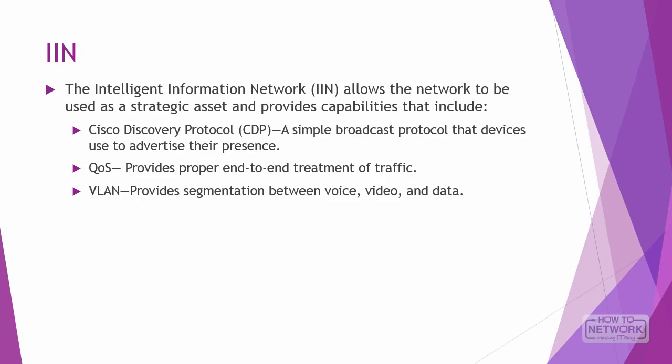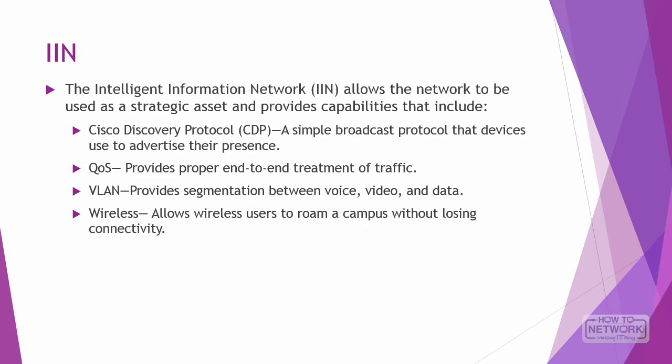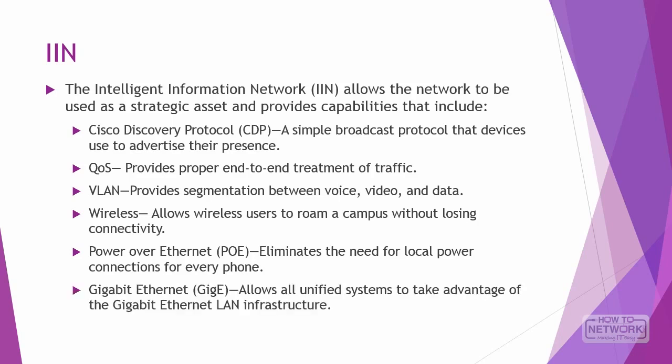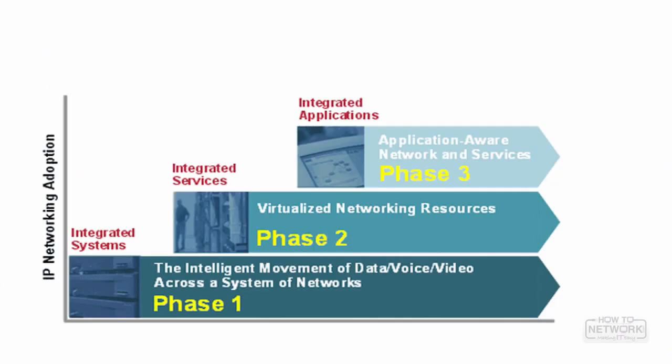Cisco wireless access points allow wireless users to roam a campus without losing connectivity. If a user roams to a different site, the system will discover the new physical location of that user. Power over Ethernet eliminates the need for local power connections to every phone. Finally, Gigabit Ethernet allows voice, video, and data to take advantage of high bandwidth speeds on the LAN infrastructure.